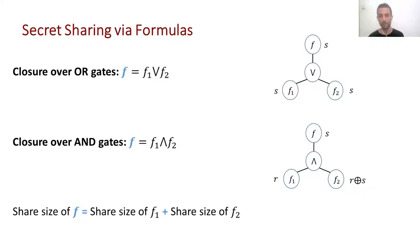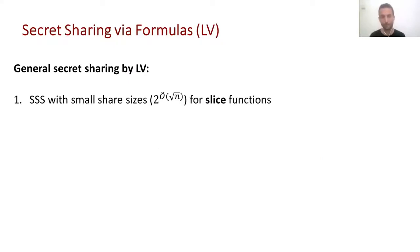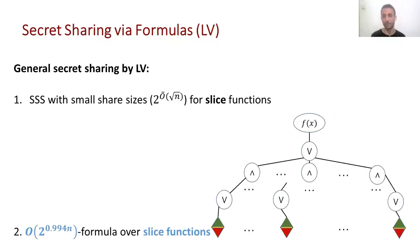We can do more complex decompositions for any function F into many sub-functions. This idea goes through many known secret sharing schemes today, including the scheme of LV. Their scheme was based on two main ideas: a very efficient secret sharing scheme for slice functions with sub-exponential share size, and then they built a formula of size less than 2 to the n, where the leaves were represented by these slice functions which had efficient implementations of secret sharing.